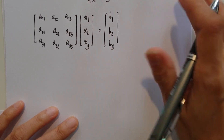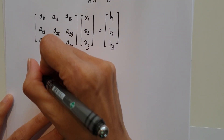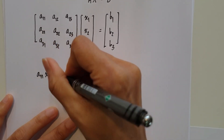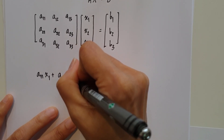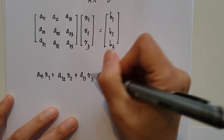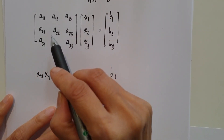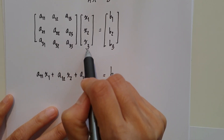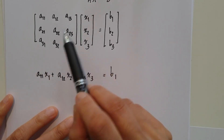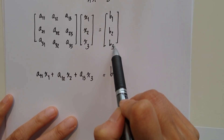If you separately write each equation, you get: A11·X1 + A12·X2 + A13·X3 = B1; the second equation is A21·X1 + A22·X2 + A23·X3 = B2; and the last equation is A31·X1 + A32·X2 + A33·X3 = B3.